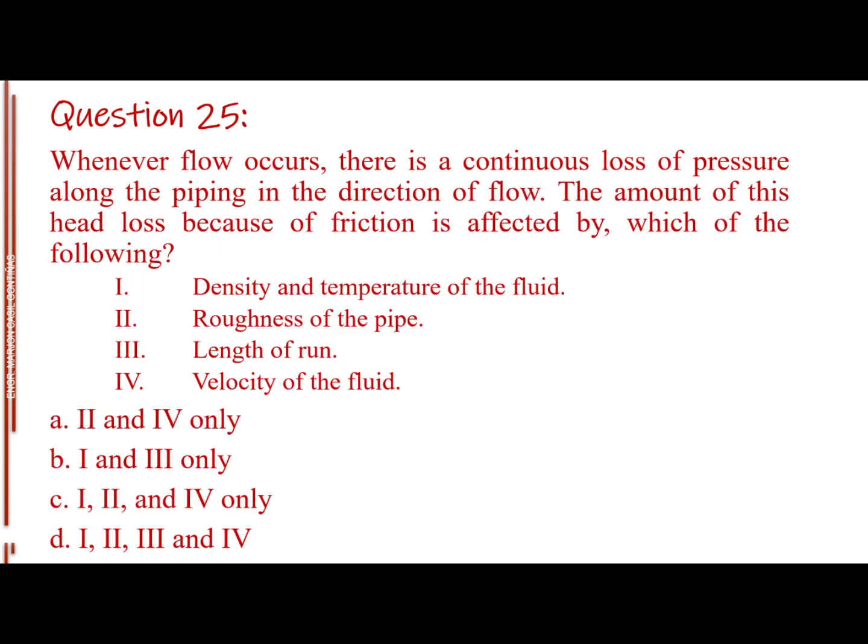Question number 25. Whenever flow occurs, there is a continuous loss of pressure along the piping in the direction of flow. The amount of this head loss because of friction is affected by which of the following? 1, density and temperature of the fluid. 2, roughness of the pipe. 3, length of run. 4, velocity of the fluid. Letter A, 2 and 4 only. Letter B, 1 and 3 only. Letter C, 1, 2 and 4 only. Letter D, 1, 2, 3 and 4. The answer is letter D, 1, 2, 3 and 4.